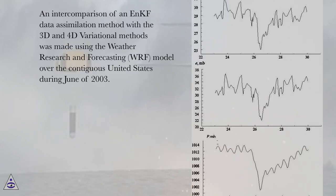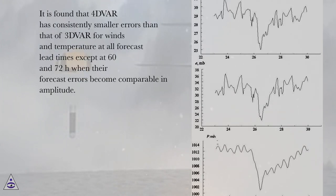An intercomparison of an NKF data assimilation method with the 3D and 4D variational methods was made using the Weather Research and Forecasting model over the contiguous United States during June of 2003. It is found that 4DVAR has consistently smaller errors than that of 3DVAR for winds and temperature at all forecast lead times, except at 60 and 72 hours when their forecast errors become comparable in amplitude.